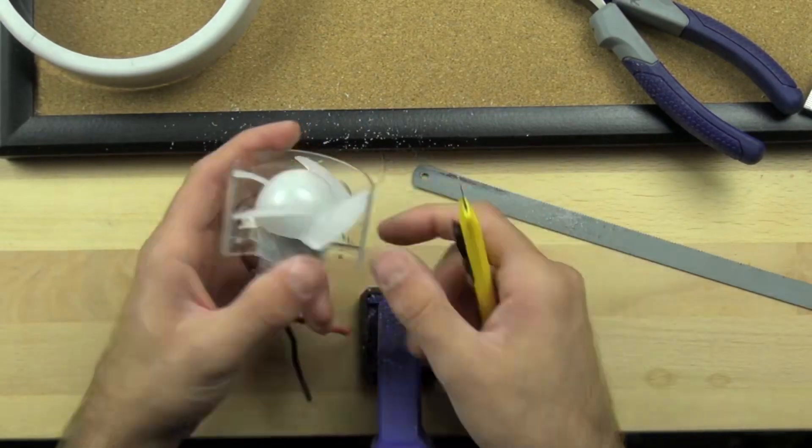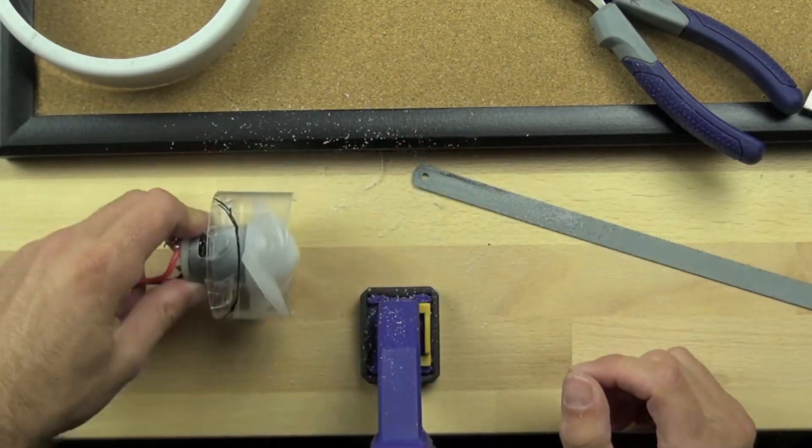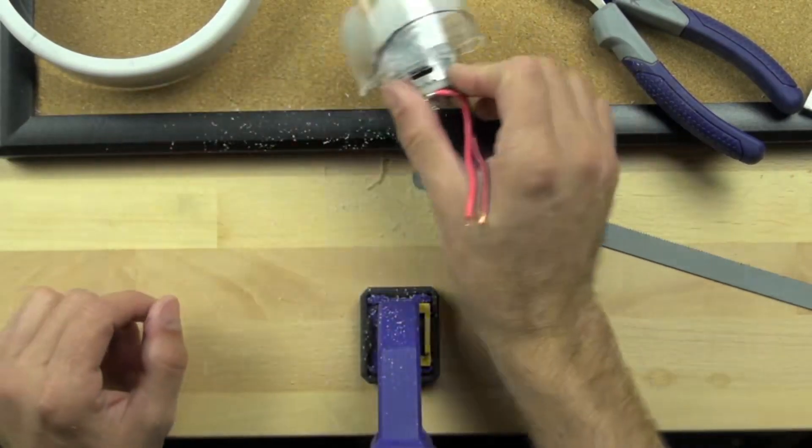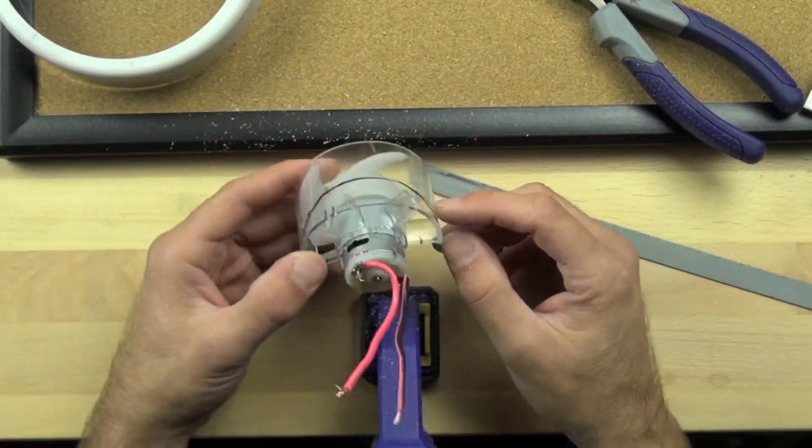We're just trimming off the excess there. Now you can see the motor spins freely and can connect with the floor. We're just checking to make sure it still works and spins freely.